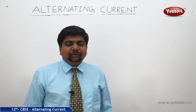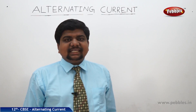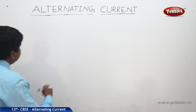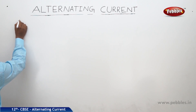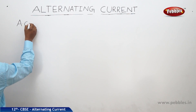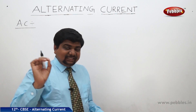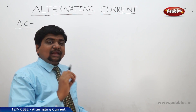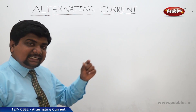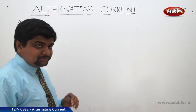Today we are going to discuss one chapter in the syllabus: alternating current. The short form of alternating current is AC. What is the meaning of AC current? Why is it called AC current? What is the difference between AC and DC currents? These things we are going to discuss in this chapter.